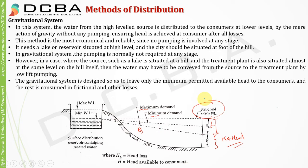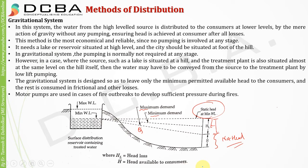The gravitation system is designed so as to leave only the minimum permitted available head to the consumers, and the rest is consumed in friction and other losses. Motor pumps are used only in case of fire outbreaks to develop sufficient pressure during fire, because during fire we need higher discharge and higher pressure. If the gravitational system is not able to develop sufficient pressure head during fire, some motor pumps may be used to help pump out the water.